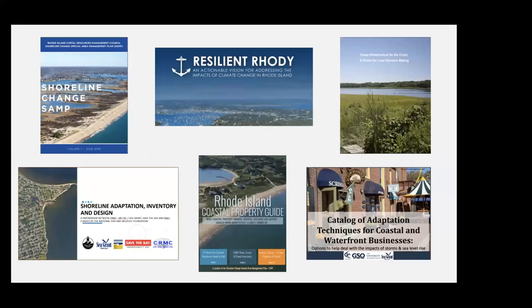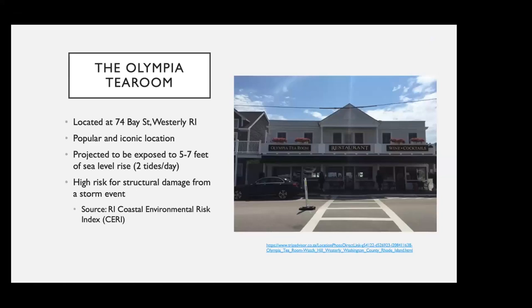Here are some resources I used throughout the semester, including a resilience roadie and shoreline change stamp. I chose the Olympia Tea Room as a case study for the Watch Hill area because it's a popular and iconic location. It's a family-owned business established in 1916, located at 74 Bay Street in Westerly, Rhode Island, and it's across the street from the Yacht Club parking lot. The Olympia Tea Room is projected to be exposed to five to seven feet of sea level rise with two tides a day, making it high risk for structural damage from a storm event.